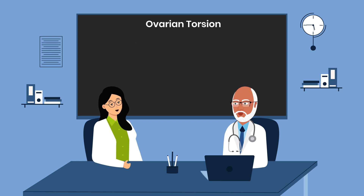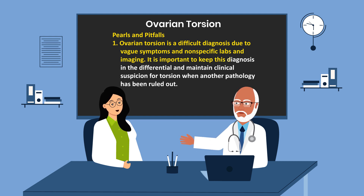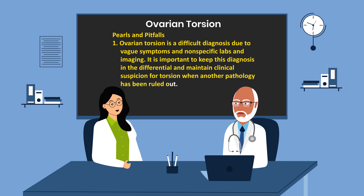Ovarian torsion is a difficult diagnosis due to vague symptoms and non-specific labs and imaging. It is important to keep this diagnosis in the differential and maintain clinical suspicion for torsion when another pathology has been ruled out.